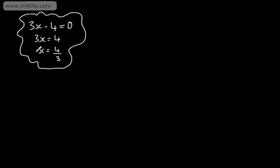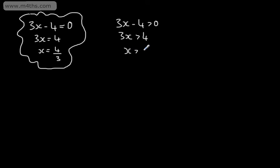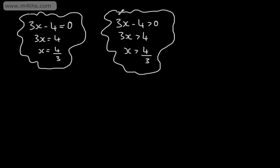When we solve an inequality, we're going to have a set of values that satisfy it. For example, if we had 3x minus 4 greater than 0, adding 4 to both sides gives 3x greater than 4, and dividing by 3 gives x greater than 4 thirds. This gives us a set of solutions — x might be 10, x might be 30 — it just has to be strictly bigger than 4 thirds.